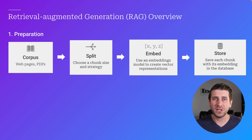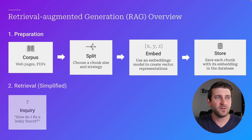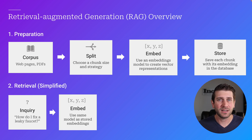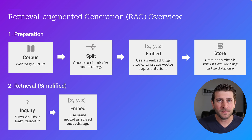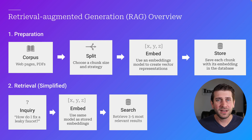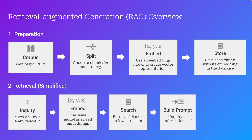Now when it comes time to calling the large language model, we need to retrieve some information. We have this user inquiry, like how do I fix a leaky faucet. We take that inquiry and use the same model that generated our stored embeddings to create an embedding from the inquiry. Then we go to our database and search using vector search — comparing the distance between two vectors to find the most similar or relevant results. We take those results, put them into our prompt, and send it off for generation.